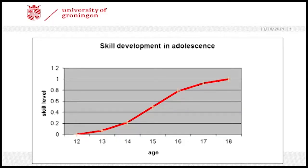We learned, for example, that toddlers are not capable of several abstract thinking skills, while in early adulthood, most adults do master these skills. We also found that many skills develop over time in a kind of S-shaped curve. This is a curve of the development of some abstract reasoning skills during adolescence. In pre-adolescence, the average level of the skill is about zero — none of the children master the skill — and around age 18, most of the adolescents do master the skill. But what does this tell us about the way a single adolescent develops?